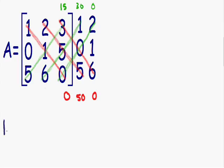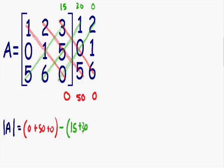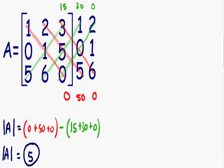To find the determinant of matrix A, we take the red numbers and add them together, then subtract the green numbers. With our red numbers we have 0, positive 50, and 0. The green numbers are positive 15, positive 30, and 0. So the determinant of matrix A is equal to 0 plus 50 plus 0, which is 50, minus 15 plus 30 which is 45. 50 minus 45 equals 5. The determinant of matrix A is equal to 5.